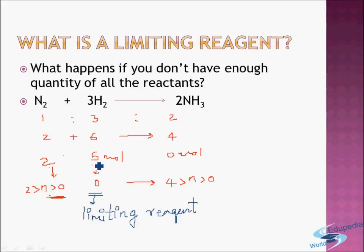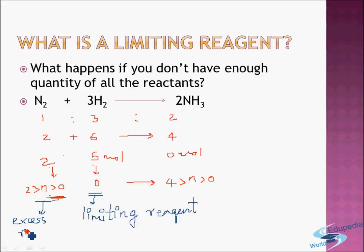When we do not have enough quantities of all the reactants, the reaction ends up with excess reactants — a reactant which is left over in the container. Here, nitrogen has been left over; the final quantity of nitrogen is not zero, it is greater than zero. So nitrogen here is the excess reagent — it is the reactant which is in excess.